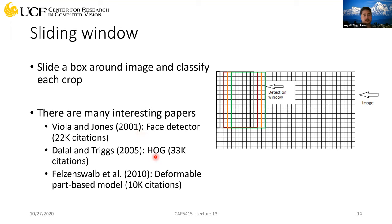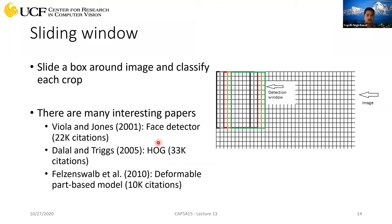We also have the Histogram of Gradients paper, which we've already seen, with around 33,000 citations. And there's the Deformable Part-Based Models paper, also used for object detection — all of these used the sliding window approach.